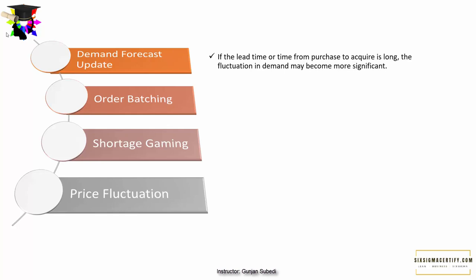If the lead time — the time from purchase to acquisition — is low, fluctuations in demand may become more significant. The inclusion of safety stock and incorrect demand forecasting is one of the main reasons for the bullwhip effect. The second cause is order batching. To avoid processing and transportation costs from frequent orders, companies tend to order large items in batches. Suppliers in turn may face a dynamic range of orders, causing the bullwhip effect across the entire supply chain.